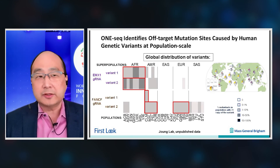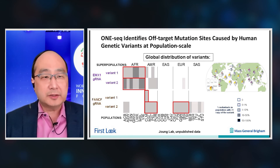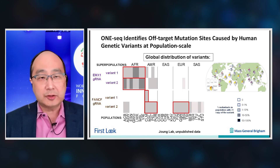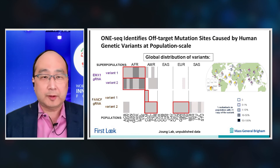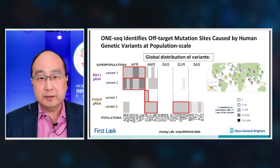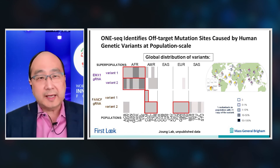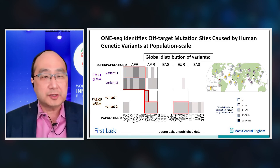The other thing that's interesting is how these variants are distributed in the global population sequenced in the 1000 Genomes Project. This heat map represents each of four different variants and the frequency at which they're found in different human populations and superpopulations — the darker the bars, the more frequent the mutation. For example, two variants for the EMX1 guide RNA are enriched in people from the African superpopulation; one from the FANCF guide RNA is enriched in the Colombian population within the admixed American superpopulation; and another is enriched in both the admixed American and European populations.